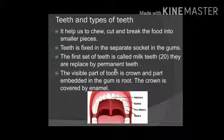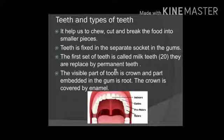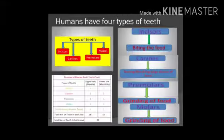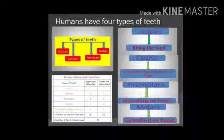Teeth help us to chew, cut, and break food into smaller pieces. Teeth are fixed in separate sockets in the gums. The first set of teeth is called milk teeth, which are present in children, and they are replaced by permanent teeth. The visible part of the teeth is known as the crown, and the part embedded in the gums is known as the root. The crown part is covered by enamel.